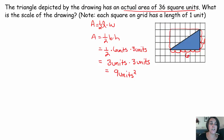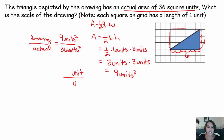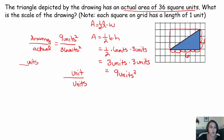To find the scale, I need drawing over actual. But I have nine units squared over 36 units squared — that's an area ratio, not a length ratio. The scale must be units over units. So I need some number of units over some number of units such that when multiplied by itself, it gives nine units squared over 36 units squared.